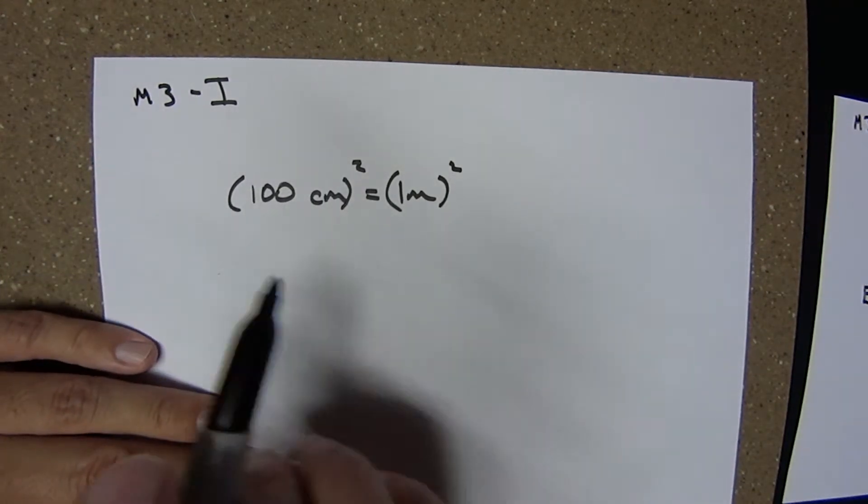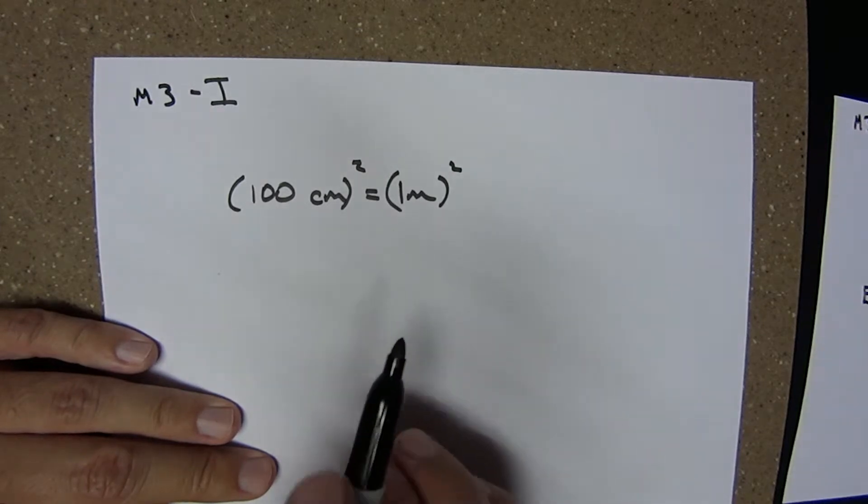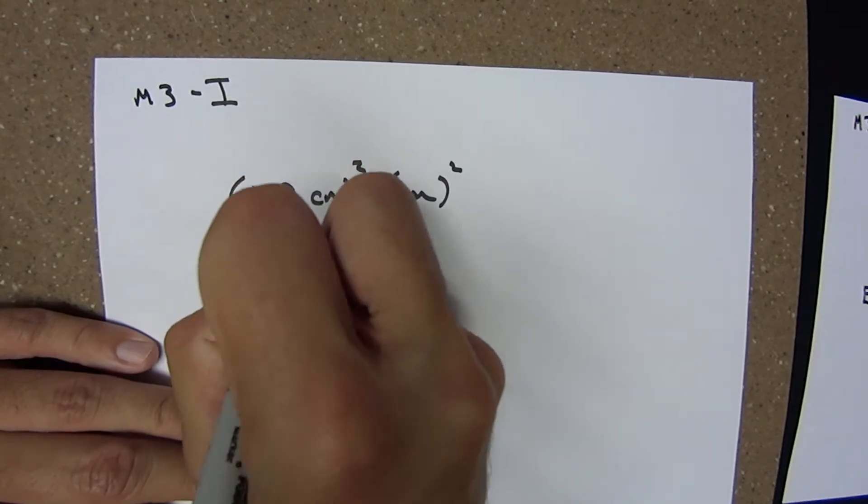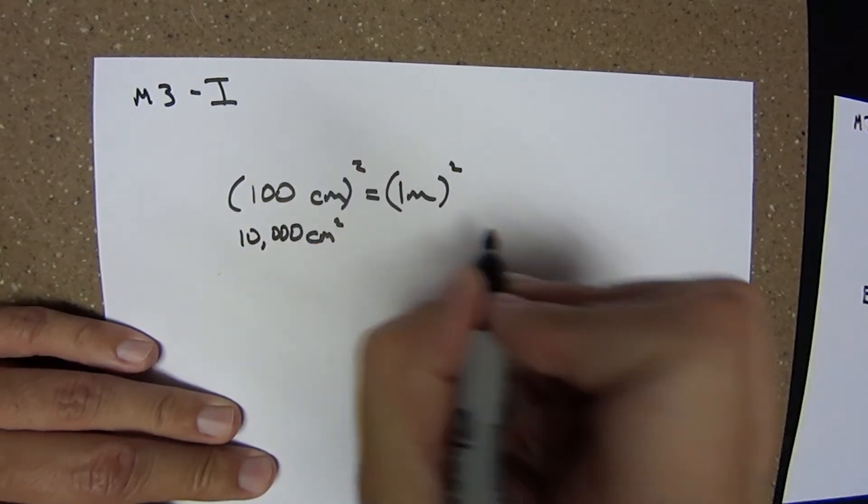100 squared, or (1 × 10^2)^2, becomes 1 × 10^4, or 10,000 square centimeters equals 1 square meter.